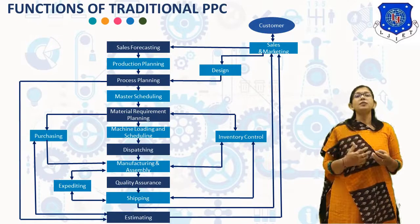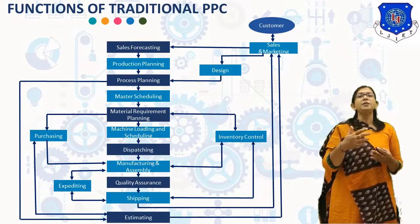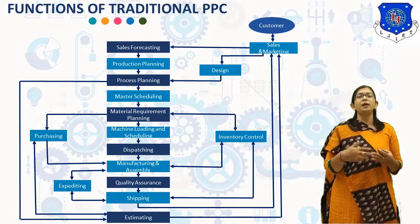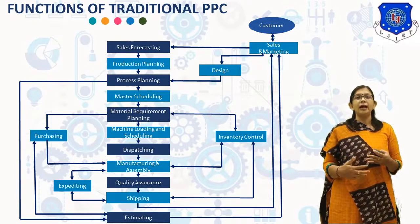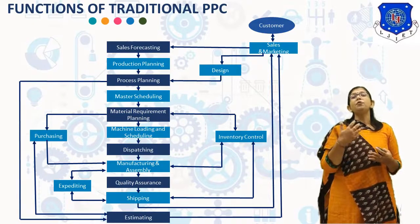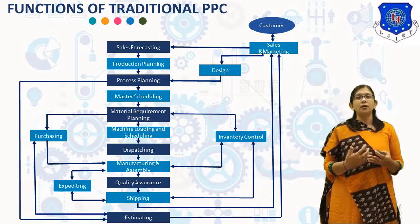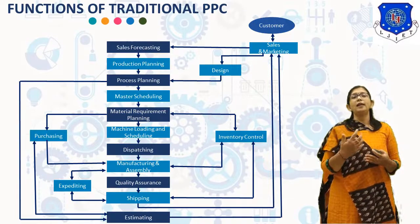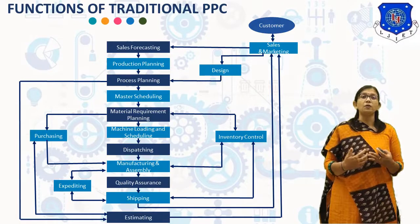The fourth function is Estimating, which involves the estimation of production cost per unit and estimation of manufacturing lead time. This function is important for determining the selling price of the component. The estimation of production cost and lead time are based on the data from route sheet, purchase plan, and accounting records.